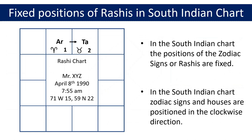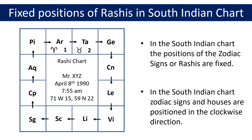The position of Taurus or Rishabha will always be in its fixed square in any South Indian chart. Moving clockwise again, the next zodiac sign Gemini or Mithuna, shown by abbreviation GE, will be in the square next to Taurus. Likewise, following the clockwise direction, the remaining nine zodiac signs or Rashis in fixed order are positioned accordingly. These signs or Rashis will always be in these fixed positions in any South Indian chart.